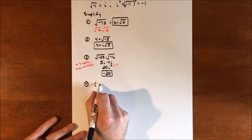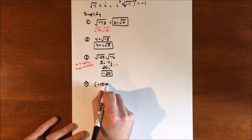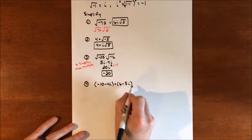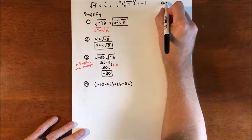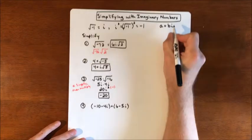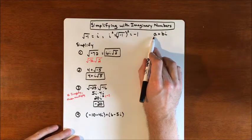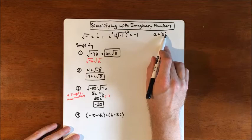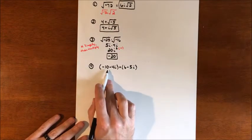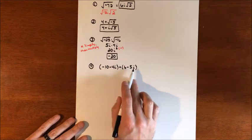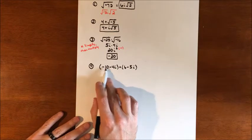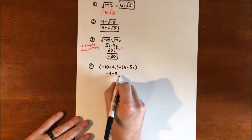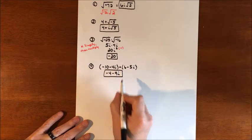A complex number has a real part and an imaginary part. For example, negative 10 minus 4i plus 6 minus 5i — we just combine like terms: reals go with reals, imaginaries go with imaginaries. Negative 10 plus 6 gives negative 4, and negative 4i plus negative 5i gives negative 9i. The i doesn't change its exponent because we're not multiplying the imaginary terms together.